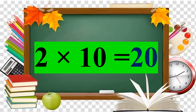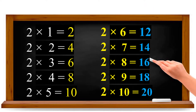Shall we say the tables together? Say along with me. 2 ones are 2. 2 twos are 4. 2 threes are 6. 2 fours are 8. 2 fives are 10. 2 sixes are 12. 2 sevens are 14. 2 eights are 16. 2 nines are 18. 2 tens are 20. Clear with the 2 table? Yes. Shall we say it once more?